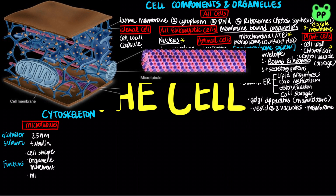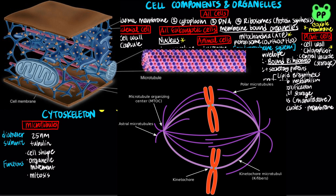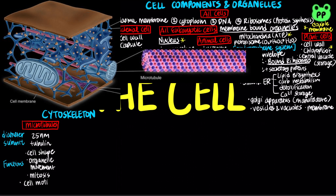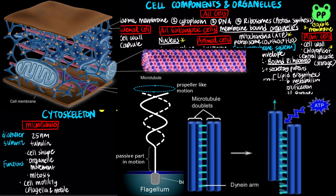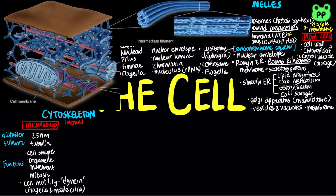Microtubules also control the movement of chromosomes during mitosis, or cell division. Microtubules also function in cell motility through flagella and motile cilia, which contain motor proteins known as dyneins that alternately grab, move, and release other microtubules.